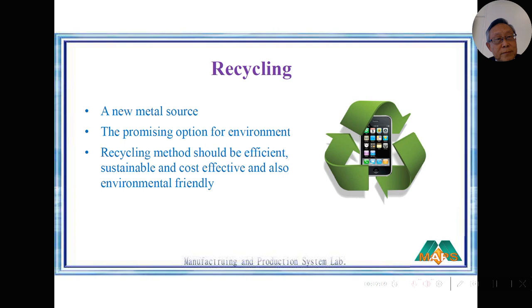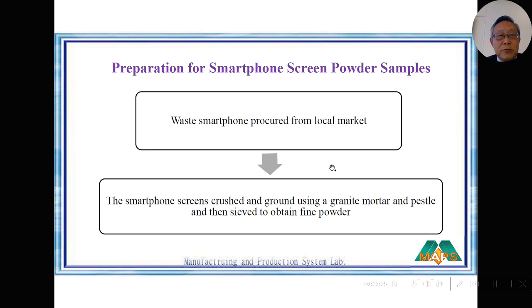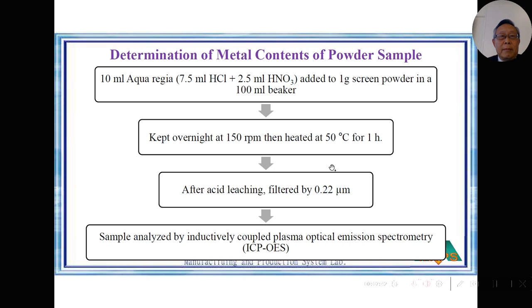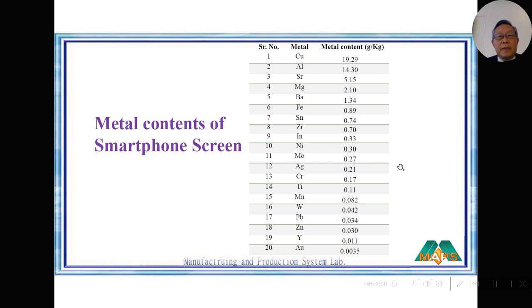The recycling process needs to serve as a new metal resource. It is promising for the environment. The method itself should be efficient, sustainable, and cost-effective. For the experiment, we first collected smartphones from the local market, crushed and ground them into powders, sieved to make fine powders, then used aqua regia to dissolve all metals.